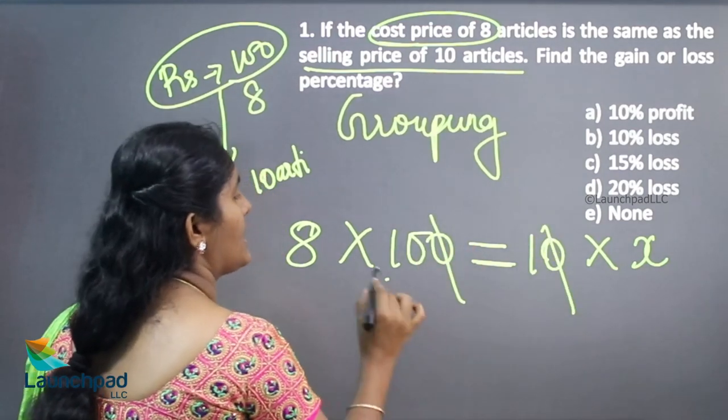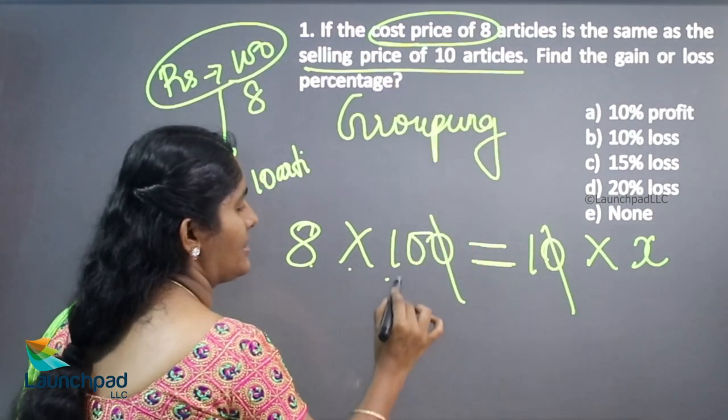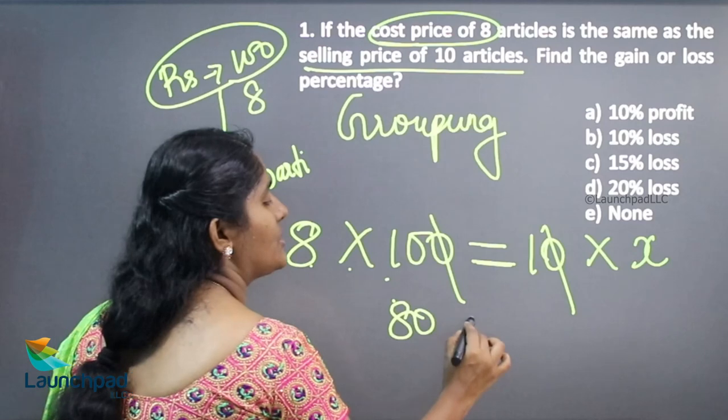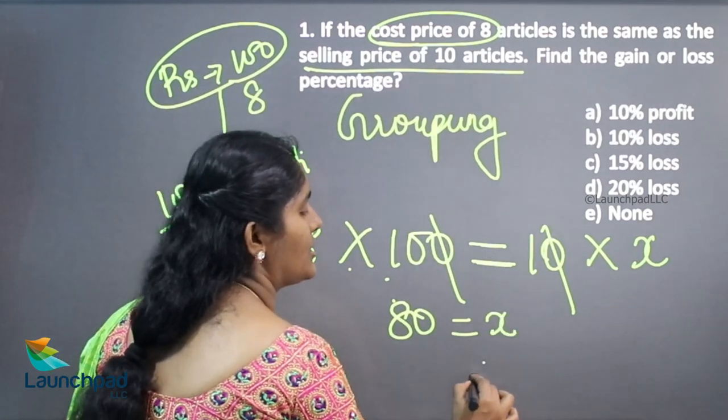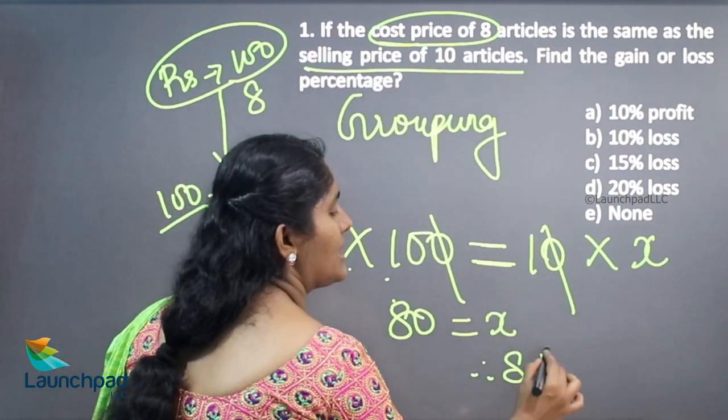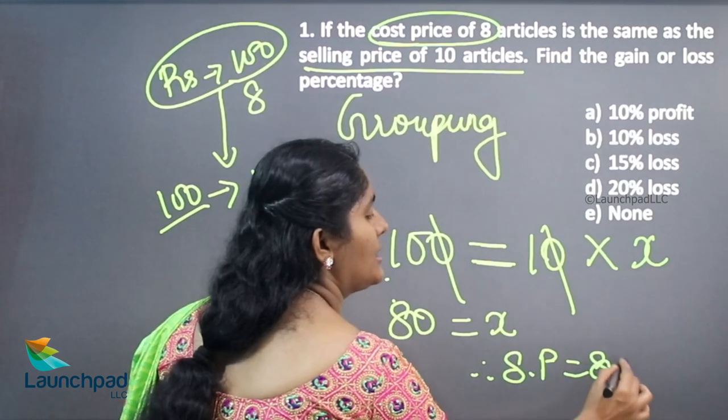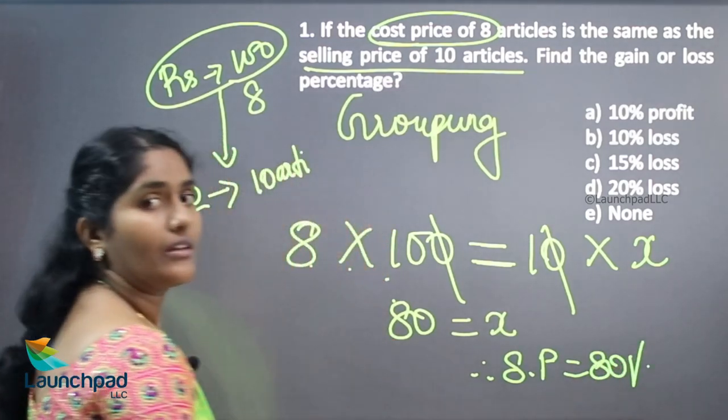0 will be cancelled, 8 into 10, 80 which is equivalent to X percentage. Therefore, selling percentage is equivalent to 80 percentage.